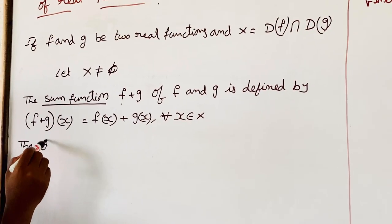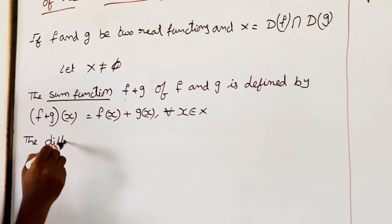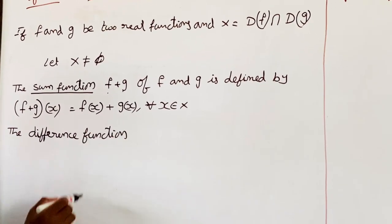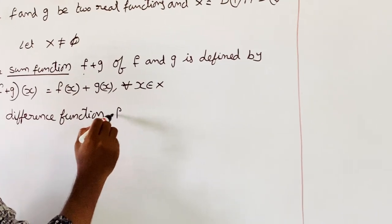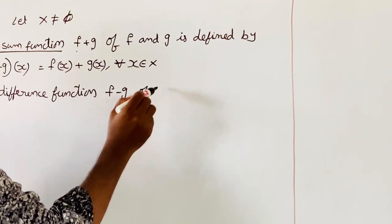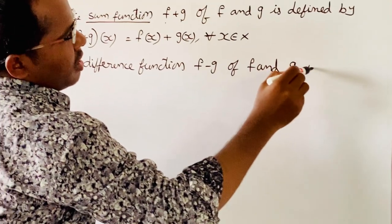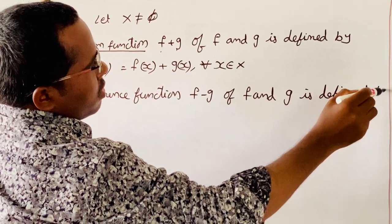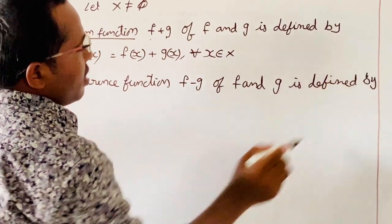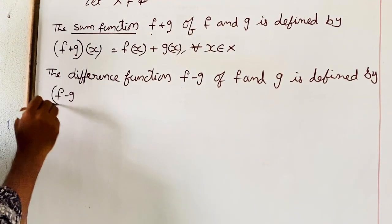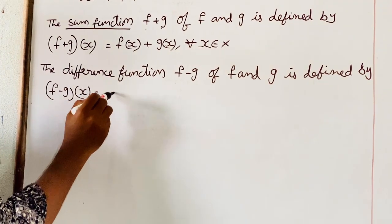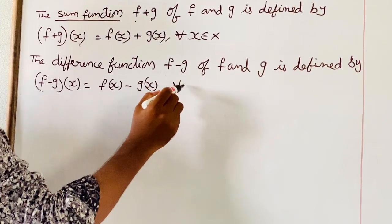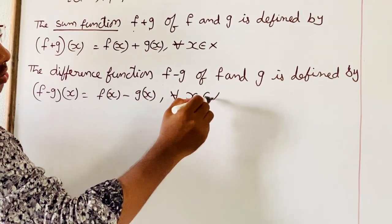Next, the difference function: the difference function F minus G is defined by F minus G of X is equal to F of X minus G of X, for all X belonging to X.